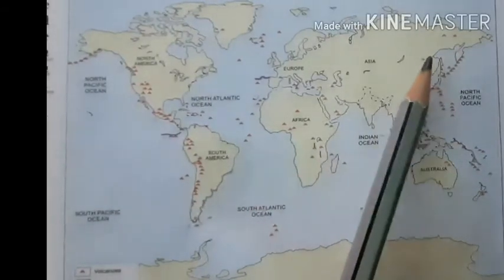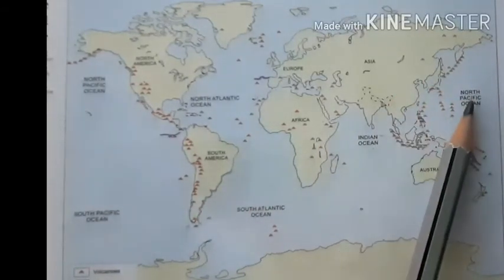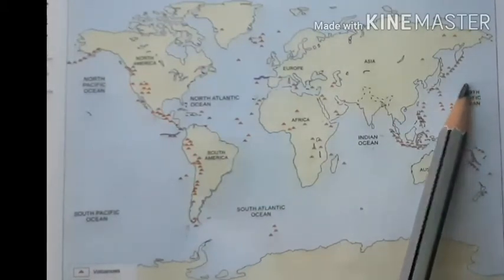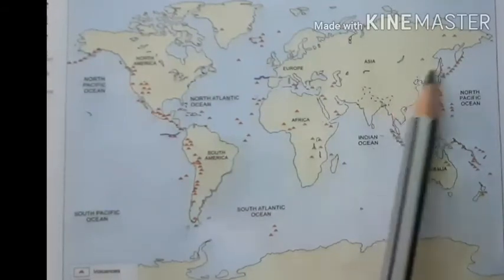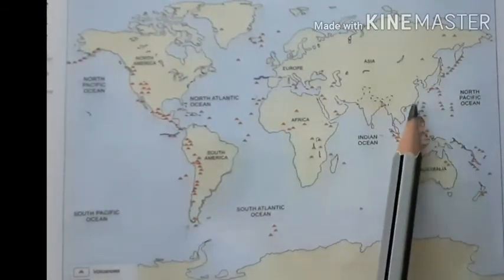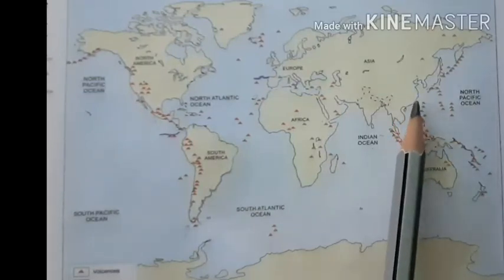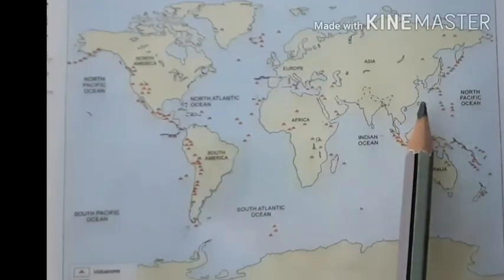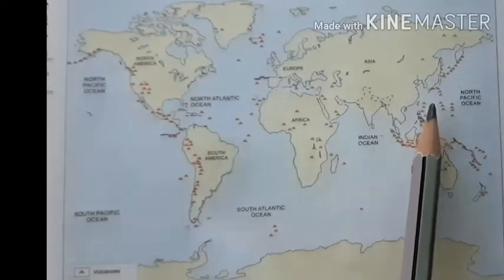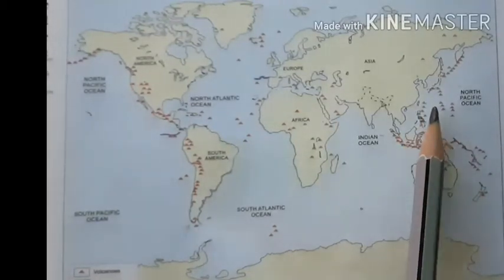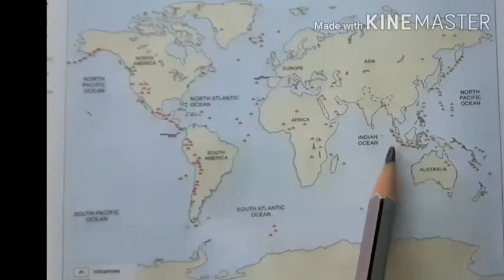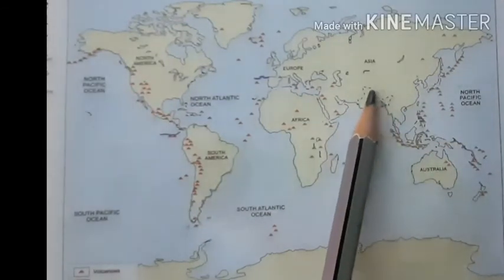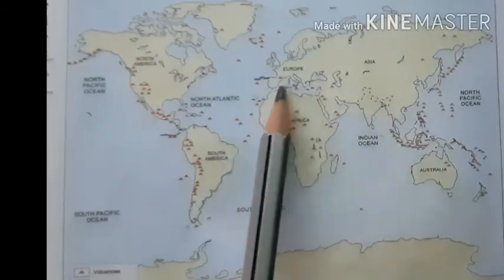These regions have a number of volcanoes because they are along the boundaries of two different tectonic plates — the Eurasian tectonic plate and the Pacific plate. The Pacific plate is going below the Eurasian tectonic plate. At this plate boundary, melting of the tectonic plate takes place, which leads to the formation of volcanoes along the plate boundaries.